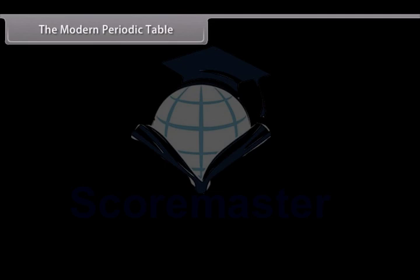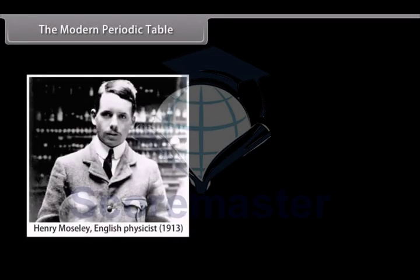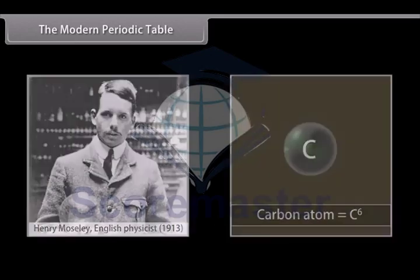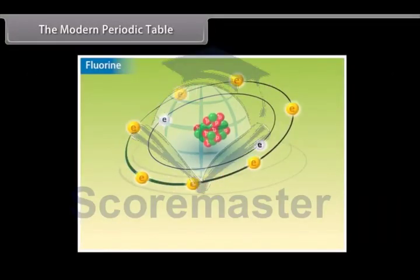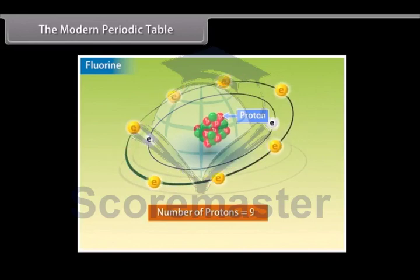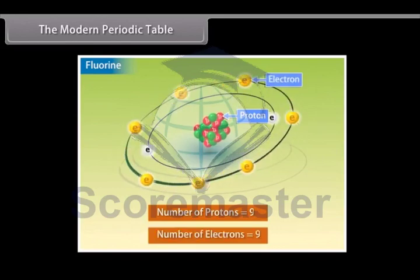The Modern Periodic Table. Henry Moseley, an English physicist, in 1913, discovered that the atomic number is the most fundamental property of an element. Atomic number of an element refers to the number of protons in the nucleus of its atom. The number of electrons in the neutral atom is also equal to its atomic number.